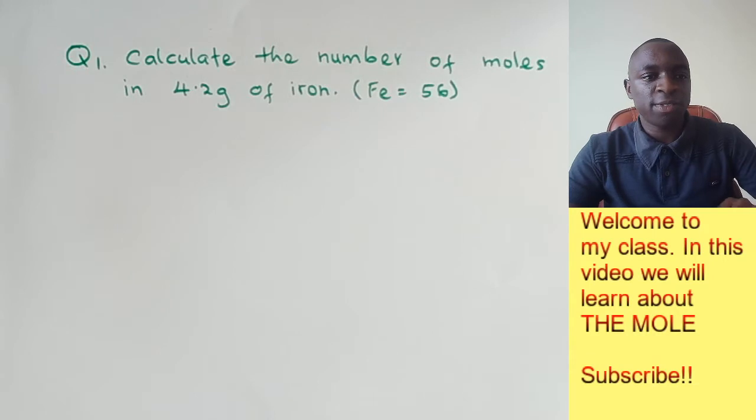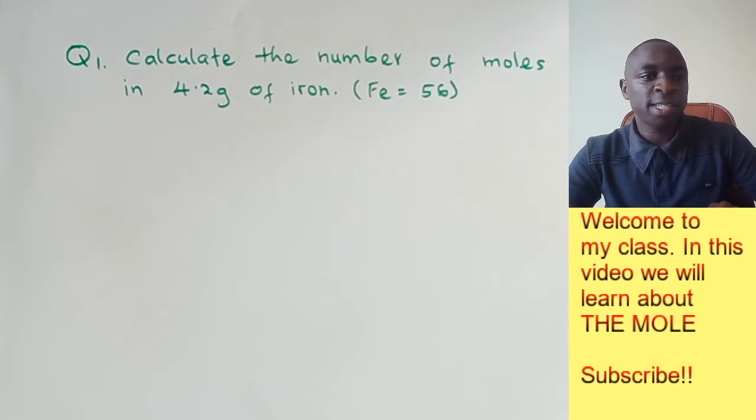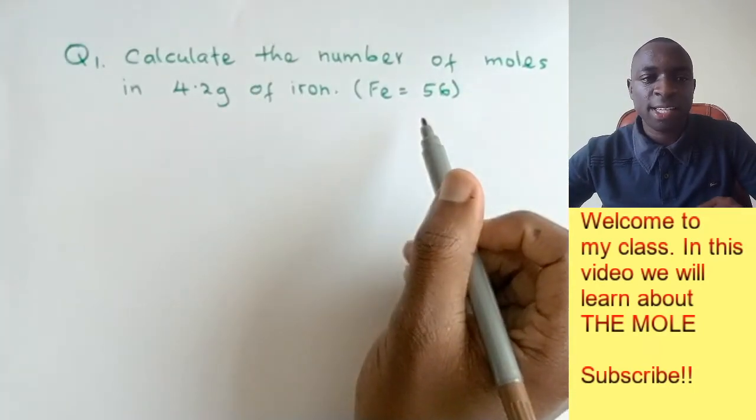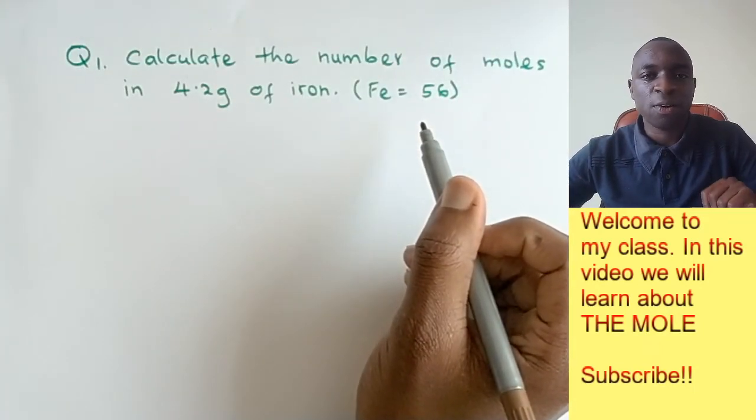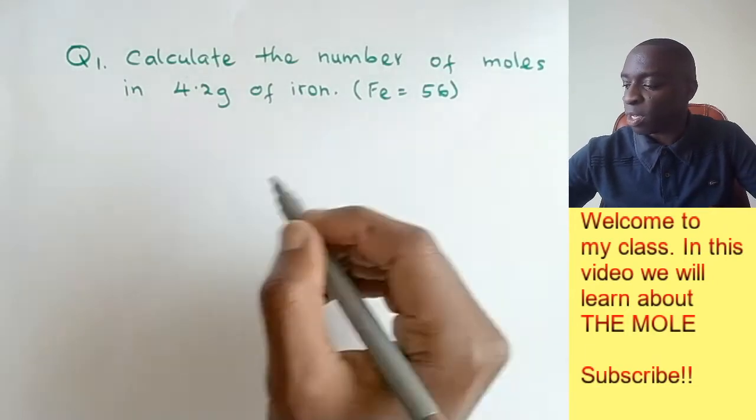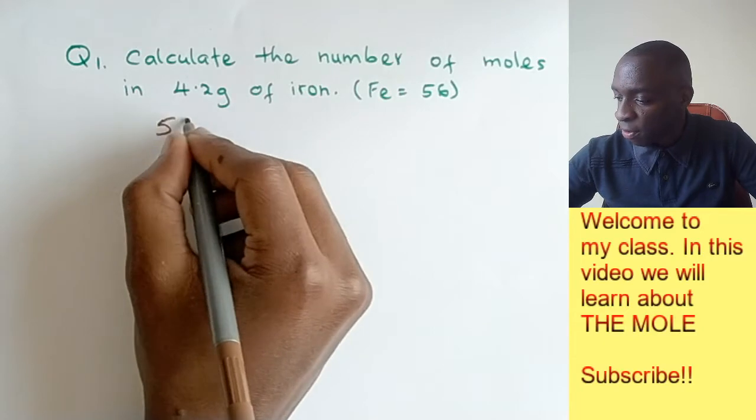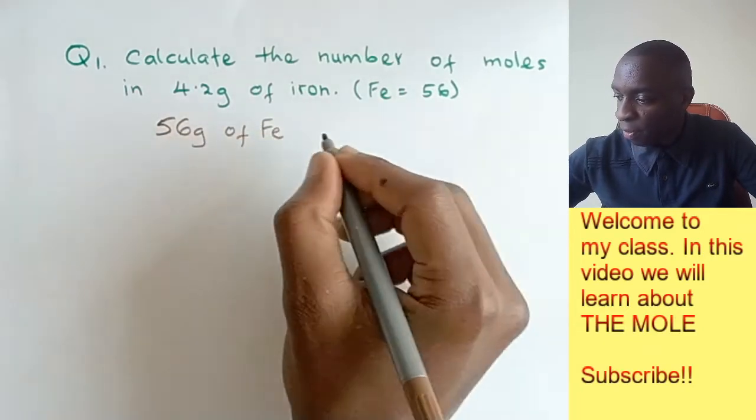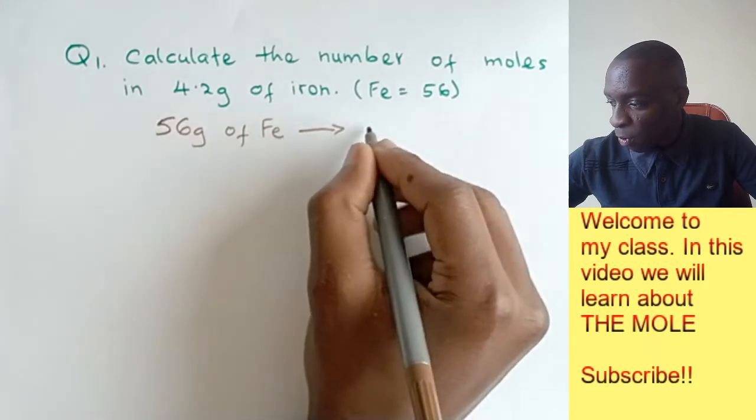In this question, calculate the number of moles in 4.2 grams of iron. The number provided in brackets stands for the relative atomic mass of iron. From our previous example, 56 grams of iron would contain 1 mole of iron.